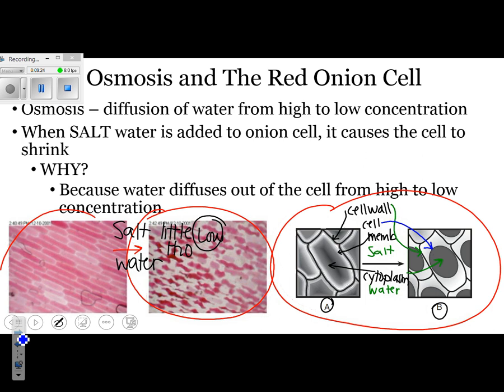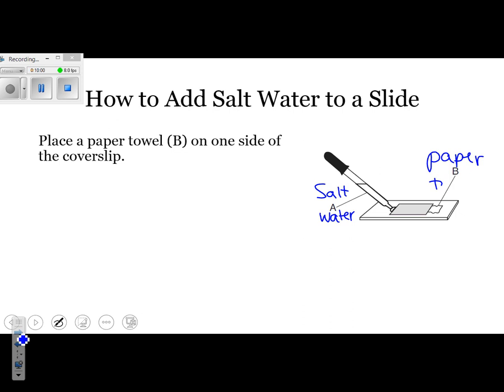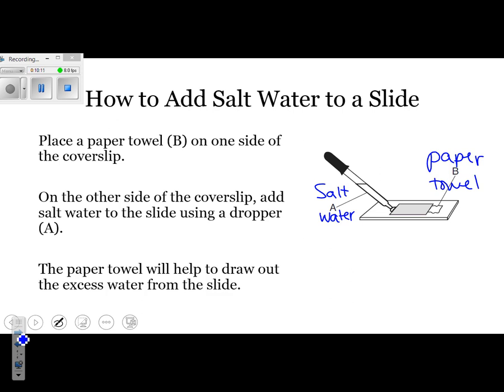The last thing that we need to know: How do we add that salt water to the slide? Remember, we want to look at the same exact cells each time to see exactly how they changed. If we look at the diagram, this does a good job of explaining what we did. The first thing we did was B. We took a paper towel and placed it on one side of the cover slip. That little rectangle, that's what we call a cover slip. Then A had salt water inside of it. That salt water, we used an eyedropper to apply the salt water. The paper towel caused the water that was originally underneath the cover slip to be sucked up. Now, instead of having regular water underneath the slide, we have salt water under the slide. And that's it for diffusion through a membrane.